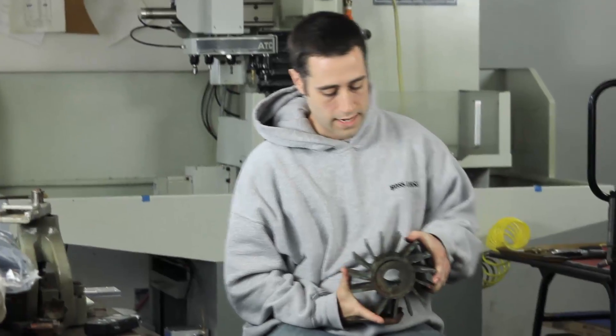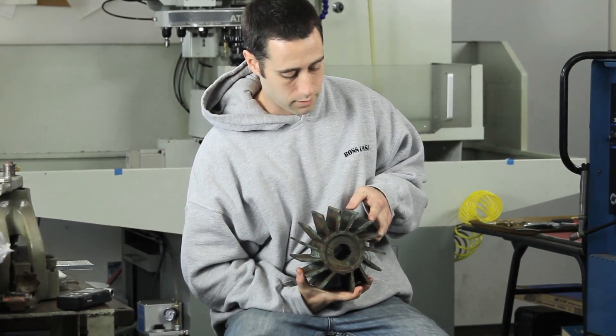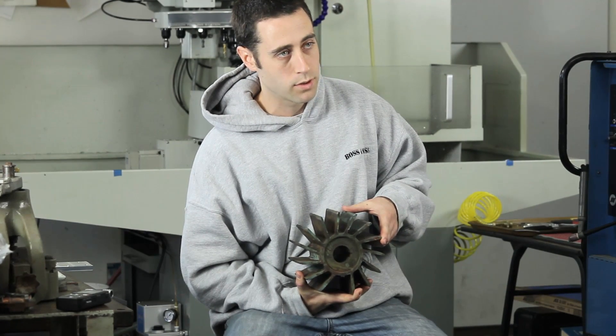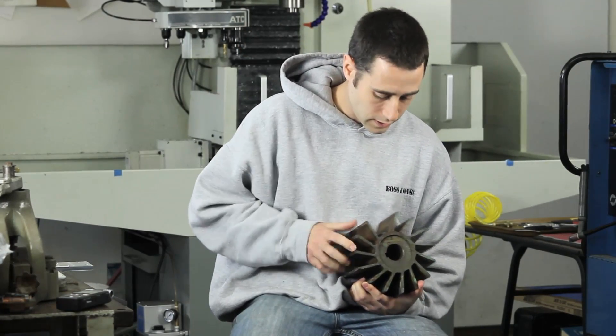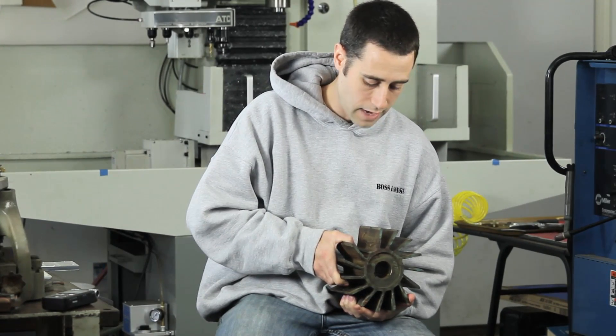This is a bronze vacuum pump impeller from a vacuum pump system in a large building that is pulling ventilation out of labs. It clearly broke the fin and has been worn, so we were asked if we could replicate this vacuum pump impeller.